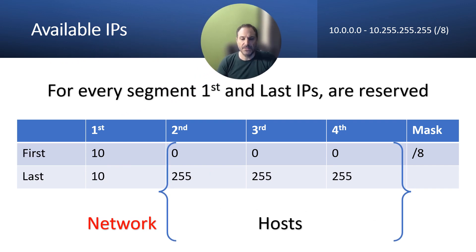Every segment, you can't use the first and the last of the segment. The first one will be the network and the last one will be the broadcast for this segment. So two IPs are deducted from the pool. If that is 256, you're getting 254.